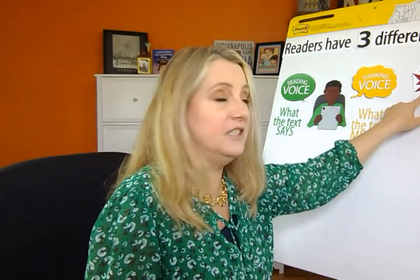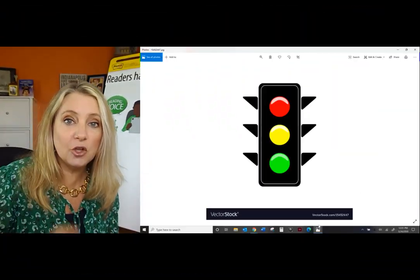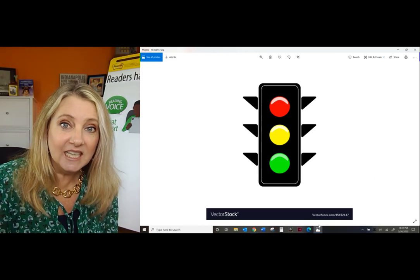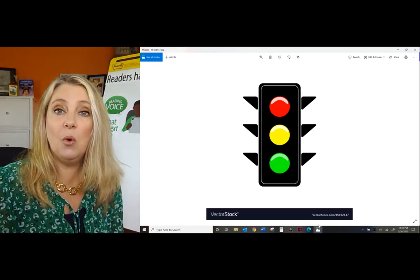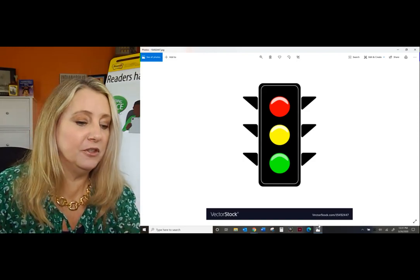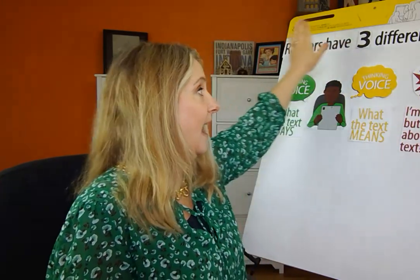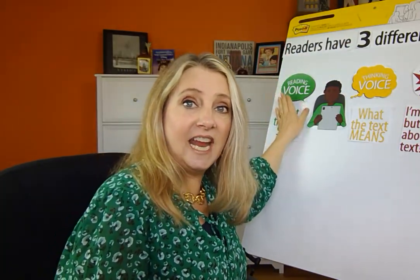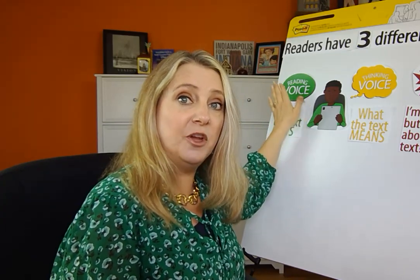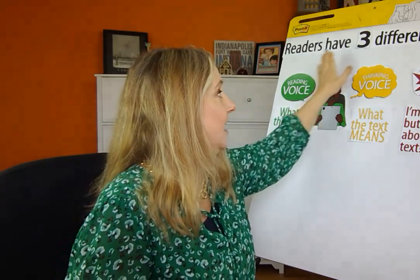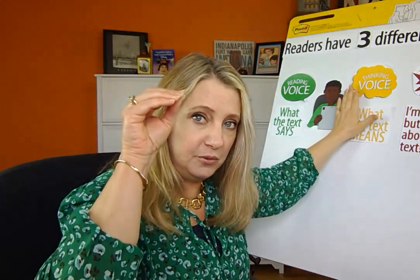But then there's the distracting voice — that's red. What does it mean when you have red at a stoplight? Of course, that means stop. And that's what you have to do. When your distracting voice has kicked in, you're thinking, but it's not about the text that you're reading or viewing. So you've got to stop yourself and actually go back to reread, re-engage that reading voice — reread the previous sentence, paragraph, or page.